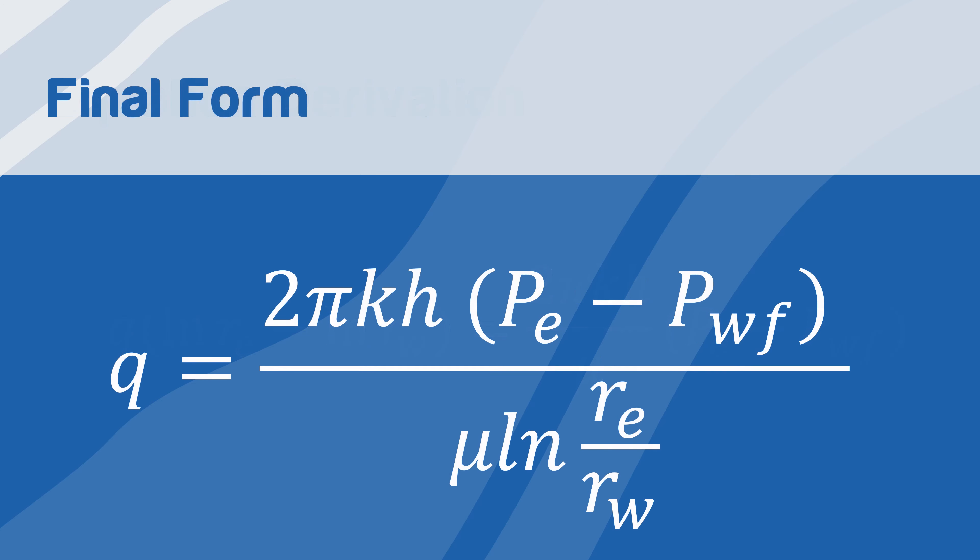Finally, we rearrange the equation and use the natural logarithm properties to obtain q equals 2πkh Pe minus Pwf over μ ln Re over Rw. This is the final form of Darcy's law for incompressible radial system.